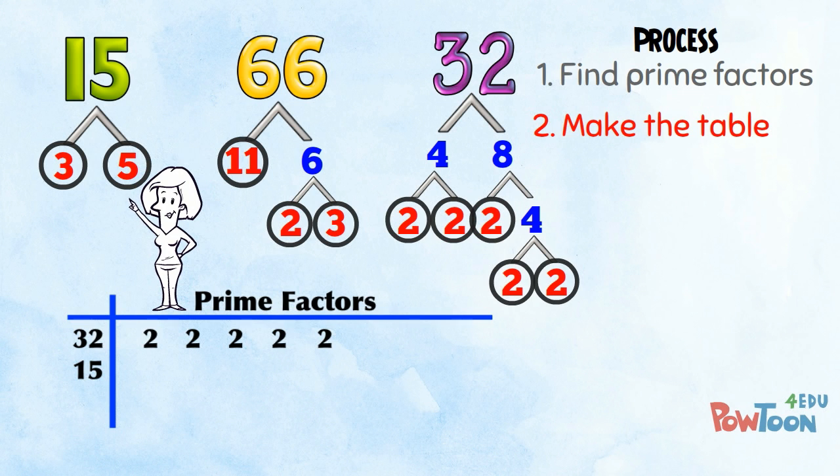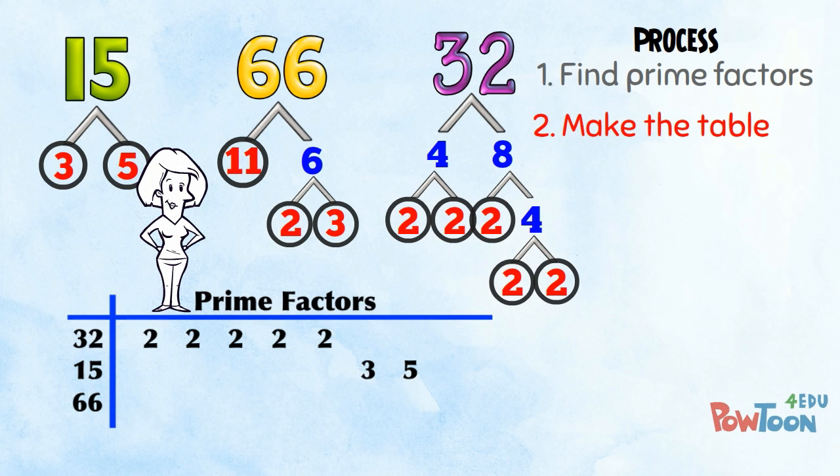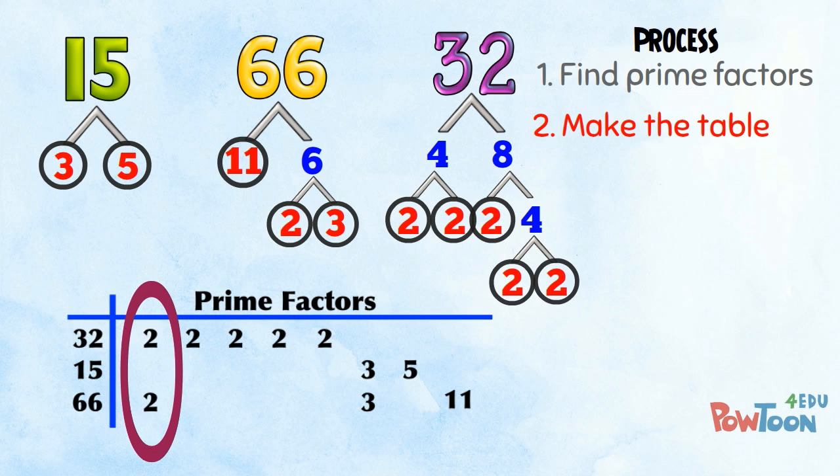15 has the prime factors 3 and 5. 66 has the prime factors 2, 3 and 11. Notice how only factors that match are in vertical columns. Everything else is in its own column. All the prime factors are listed in the table now.